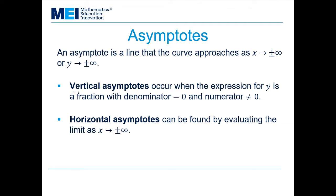Vertical asymptotes occur when the expression for y is a fraction with denominator equal to 0 and numerator not equal to 0. Horizontal asymptotes can be found by evaluating the limit as x tends to plus or minus infinity.